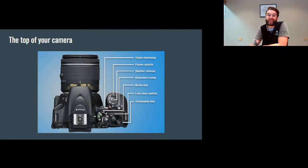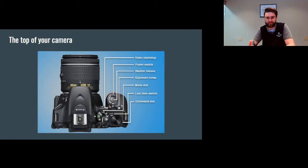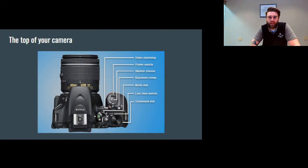Underneath the mode dial and live switch is the command dial. When you're on your physical camera, there's a dial that allows you to set certain commands. When you're in full manual, you can use this command dial to switch between your ISO, your shutter speed, and your exposure. You can set all of these things and play with how light, subject, foreground, and background affect whatever you're photographing. The command dial is super important when you're using settings other than auto.